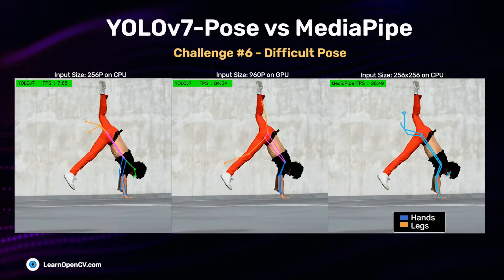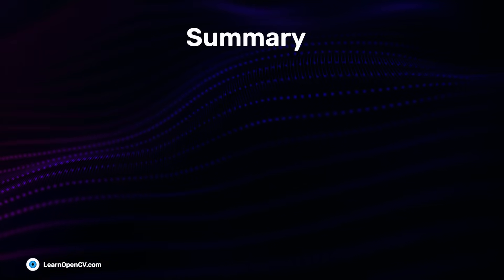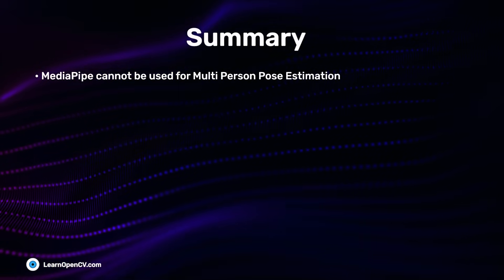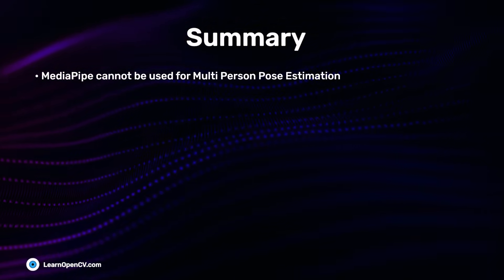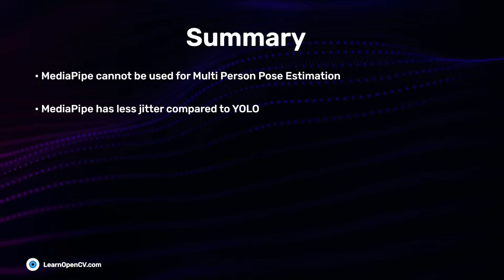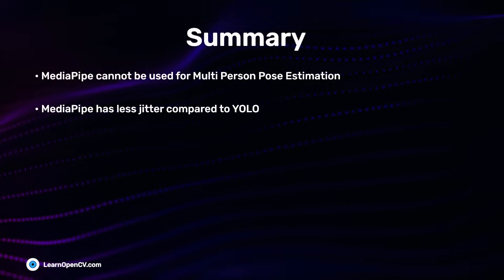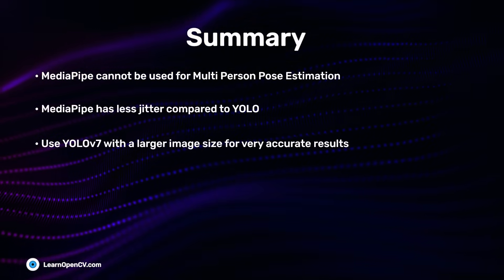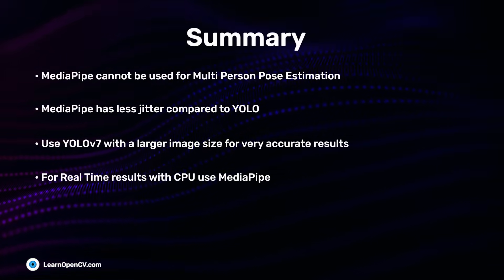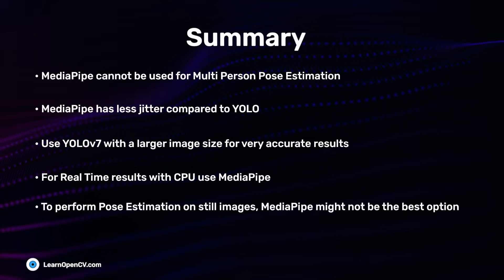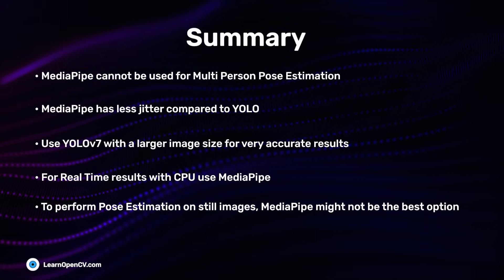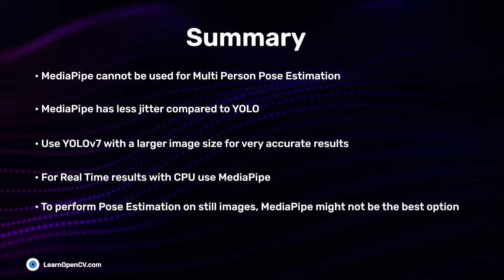Let's summarize the key takeaways. If you need multi-person pose estimation, MediaPipe is not an option — use YOLO. MediaPipe has less jitter, attributed to its tracking step. If you have a GPU and want accurate results, use YOLO V7 with a larger image size. For real-time performance on CPU, go with MediaPipe. For still images, MediaPipe's detection-plus-tracking advantage is reduced, though it does have a separate image inference mode.